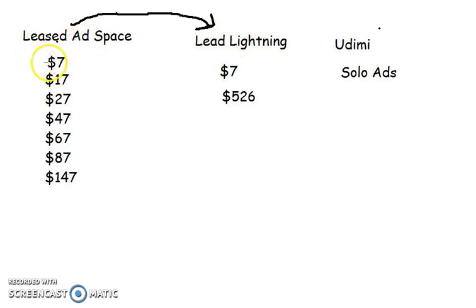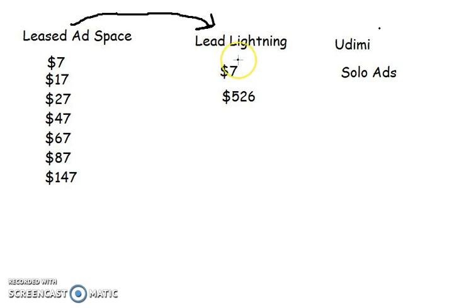After purchasing Lead Lightning, what you want to do is take your Leased Ad Space referral link and plug it into the back office of Lead Lightning. What that will do is actually promote Lead Lightning via email marketing, and also promote Leased Ad Space for you. There's a video in the back office once you get started — simple and easy to understand. Make sure you plug your link in there and promote Link B. Link B will actually promote Lead Lightning and Leased Ad Space.